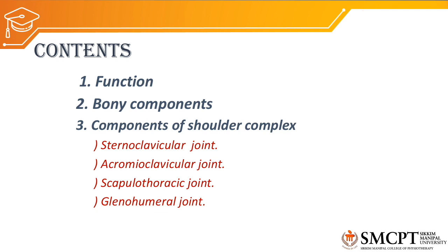The components of the shoulder complex are the sternoclavicular joint, acromioclavicular joint, scapulothoracic joint, and glenohumeral joint. So there are four joints which form the shoulder complex.